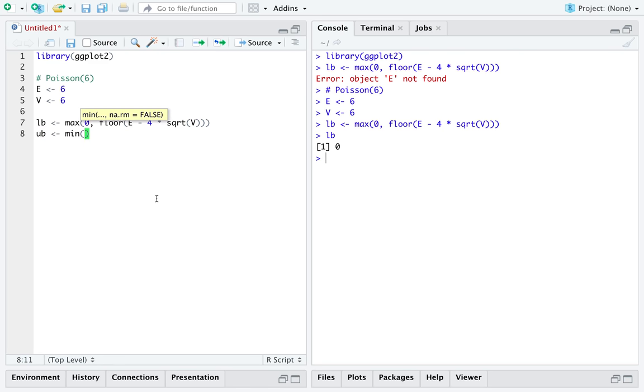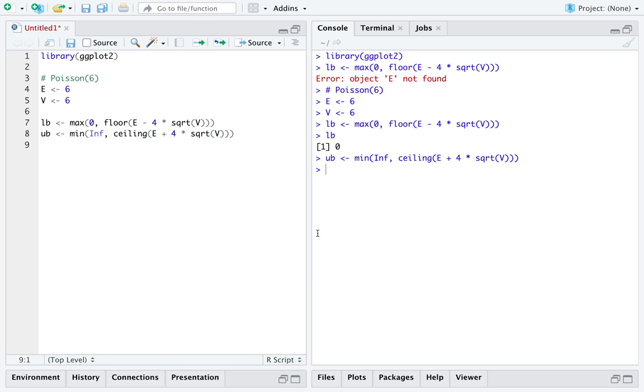And the upper bound, that's going to be the minimum of positive infinity or ceiling as it's named in R of E plus 4 times the square root of V. And obviously the upper bound will not be positive infinity.